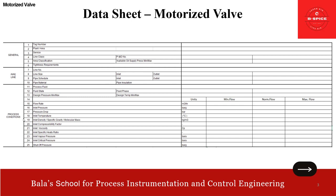The third section is process conditions. This will be coming from our process colleagues, so you don't have to worry — just request from them. Parameters include: process fluid, fluid state, design pressure, flow rate, inlet pressure, pressure drop, inlet temperature, inlet density, specific gravity, molecular mass, inlet compressibility factor, inlet viscosity, inlet specific heat ratio, inlet vapor pressure, inlet critical pressure, and shutoff pressure.